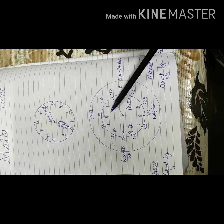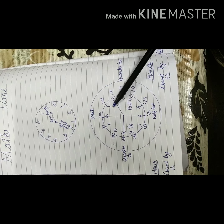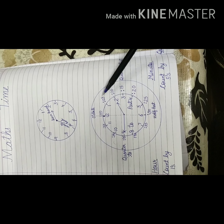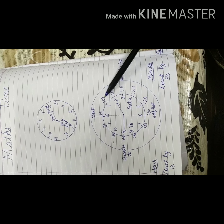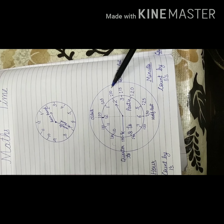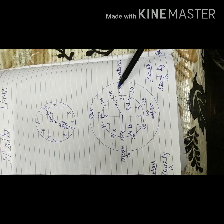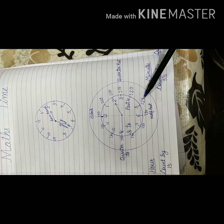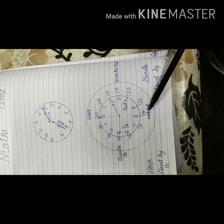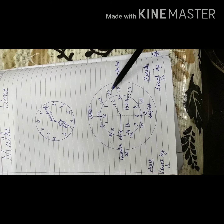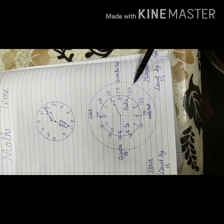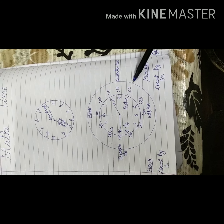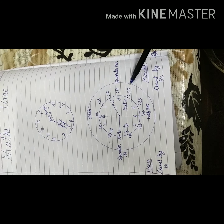Yesterday we did 12 digits. How do we do it? 5 1's are 5, 5 2's are 10, 5 3's are 15, 5 4's are 20, 5 5's are 25, 5 6's are 30. Minutes are counted on the 5-times table. Yesterday we did it. Good — that is something you have to remember.